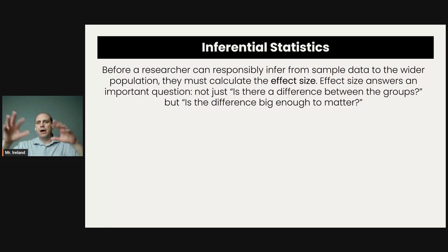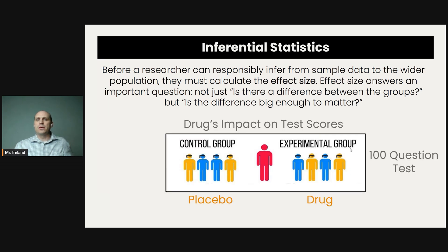Let's say you develop a magic pill that's supposed to increase intelligence, and this time you do the experiment right and randomly assign participants to the experimental or the control group. The experimental group is going to get your IQ drug and the control group is going to get a placebo. You're going to give them a 100 question test and collect their scores.